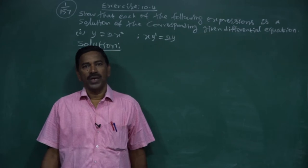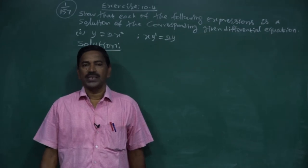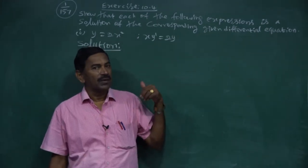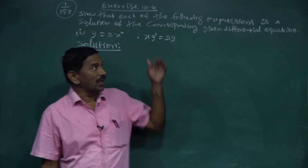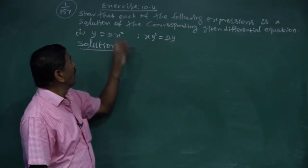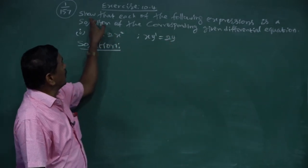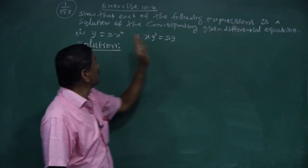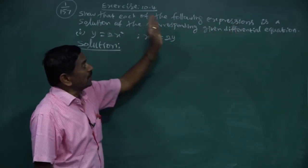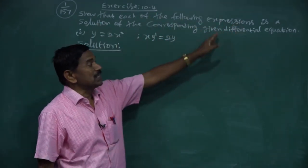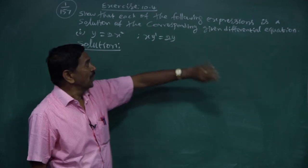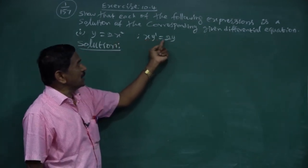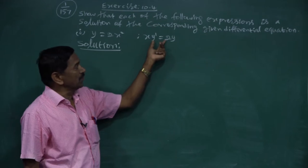Good morning children. Today we have exercise 10.4. First topic, first subject — there are two sub-questions. The problem asks us to show that each of the following expressions is a solution of the corresponding differential equation. The differential equation given is x·y' = 2y.